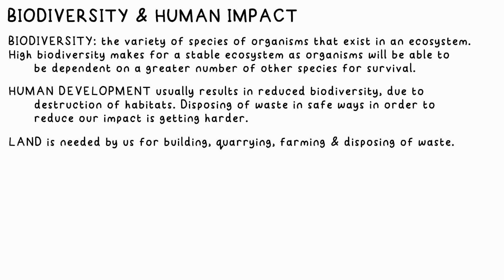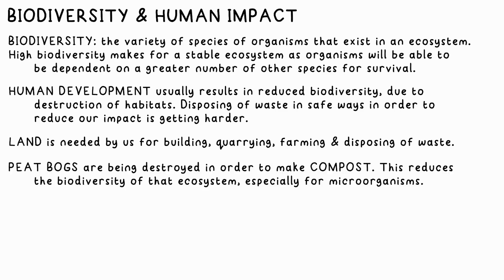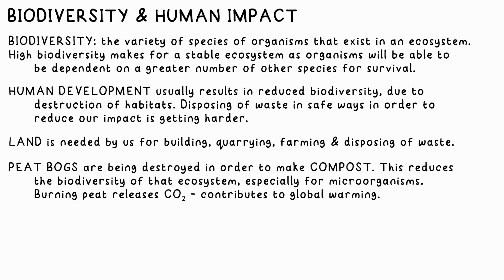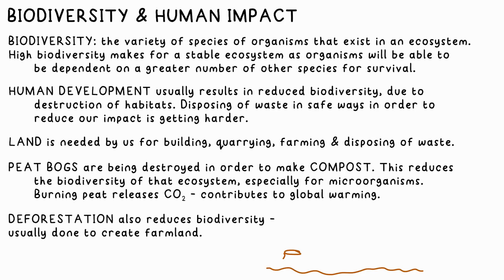One factor is the land that we need for building, quarrying, farming, and disposing of waste. An example of this is the destruction of peat bogs to make compost, which affects the habitat of many organisms and microorganisms. Burning peat also releases CO2. Deforestation — bad on a big scale — flattening forests reduces biodiversity, and it's often done to create farmland.